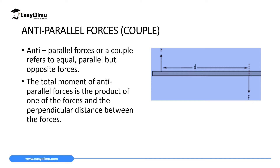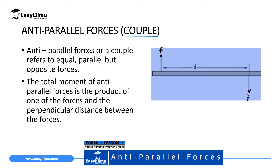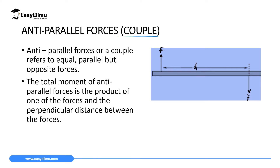Antiparallel forces, or what we call a couple — you may know a couple from families and relationships, but here we are talking of a couple in terms of forces. These are forces which are equal, parallel, but act opposite to each other. As you can see on the screen, the first force acts upward and another acts downward, both labeled F, meaning they are equal. The two forces are at a distance d from each other.